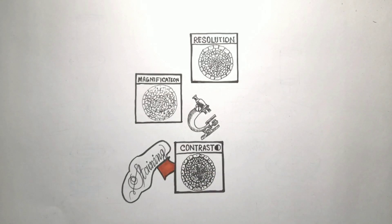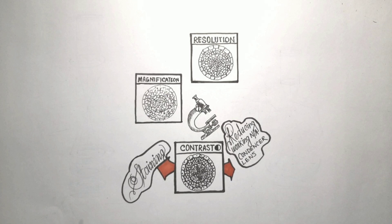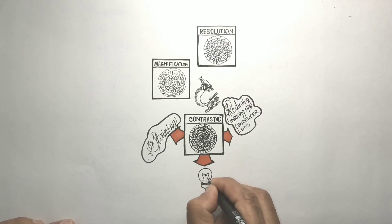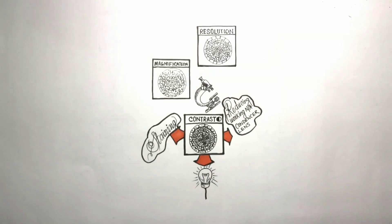In microscopy, to enhance contrast artificially, we practice a process known as staining, but staining has its own limitations. Another alternative is to significantly reduce the condenser's working numerical aperture by closing the iris diaphragm.